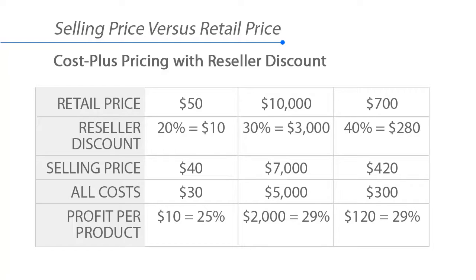Cost plus pricing with reseller discount. Let's look at some examples. If the retail price is $50 and the reseller discount is 20%, or $10, that makes the selling price $40 — which is $50 minus $10. The selling price is the price we're selling to the reseller or distributor. If all of our costs to make and sell the product are $30, then we're making $10 of profit per product. That's $40 minus $30 cost, for a profit of $10, which represents 25% of the selling price.